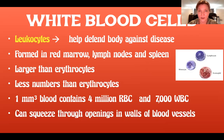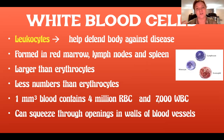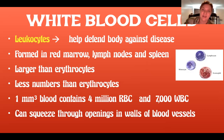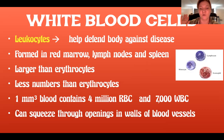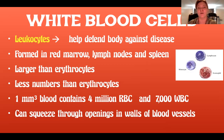White blood cells can squeeze through the openings in the walls of blood vessels because they have a globular shape. Like an amoeba, they can squish themselves between the walls of blood vessels and body tissues, because they need to be able to get anywhere in your body where there is an infection or a possible pathogen.